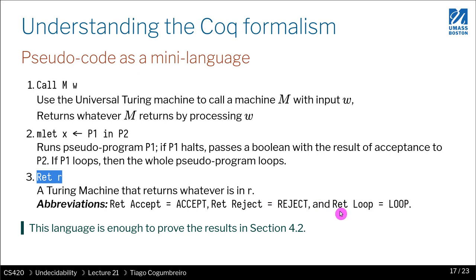Calling M with W represents the universal Turing machine. Ret r just represents a Turing machine that either only accepts or only rejects or only loops for whatever input. And then there's this which is combining running a Turing machine P1 and then continuing and running a machine P2, so it's sequencing the execution of two Turing machines.